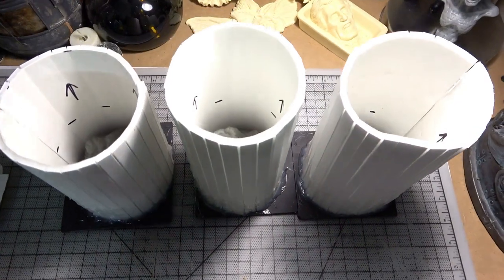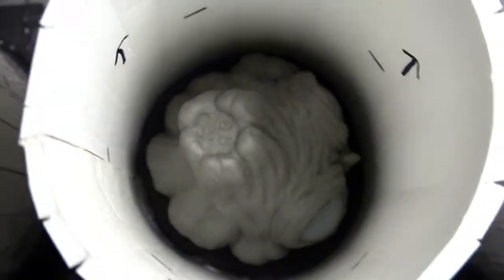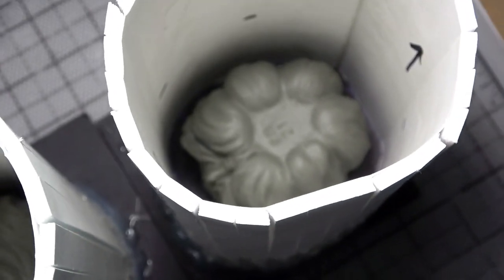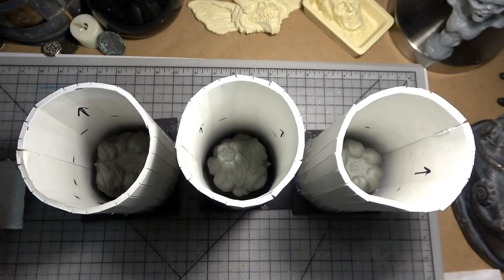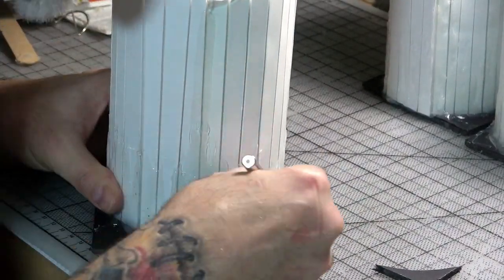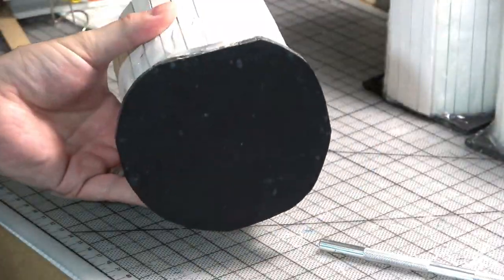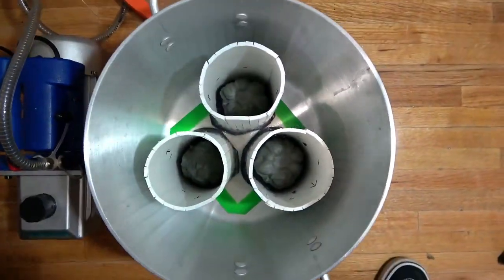And here's the finished mold boxes. The last thing I do is trim off the corners of the bases so that they will fit into my vacuum chamber. And there you go, a perfect fit.